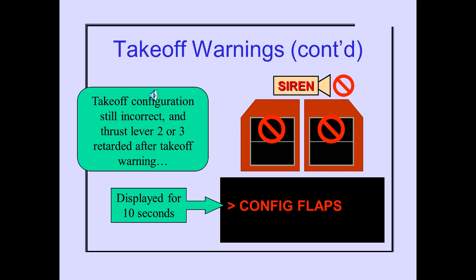If engines 2 and 3 thrust is decreased below the takeoff range and the airplane is still incorrectly configured for takeoff, the siren no longer sounds and the master warning lights extinguish.